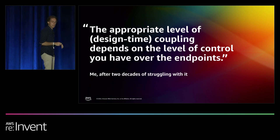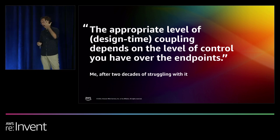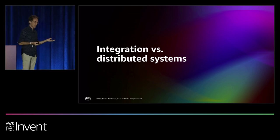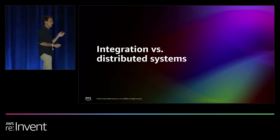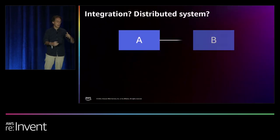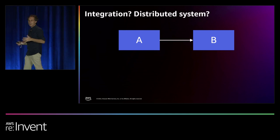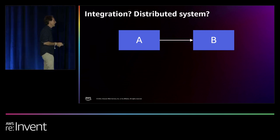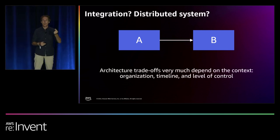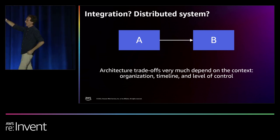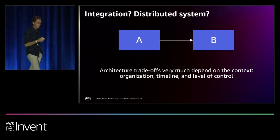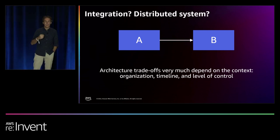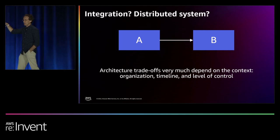That leads to our original question: are we integrating here or are we building distributed systems? Is there a difference? Does it matter? On the blue-box picture, a distributed system and an integrated system both look exactly the same. But there's an important nuance — and that is the context. You cannot tell from the blue box and the line alone whether this is building a distributed system or integrating. The answer is in the context around this: where does this happen, who does it, when does it happen, and what level of control do you have?